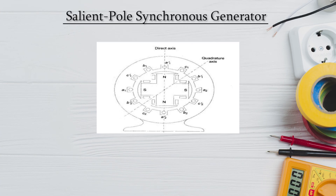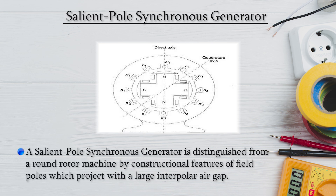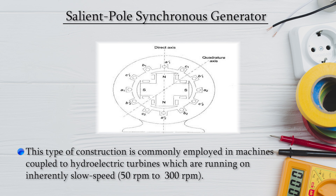A salient pole synchronous generator is distinguished from a round rotor machine by its constructional feature of field poles projected out of the large inter-polar air gap, in which we put the winding. This type of construction is commonly used in machines coupled to hydro-electrical turbines, which run at inherently slow speeds. Salient pole synchronous generators are more suitable for low speed operation using hydro turbines.